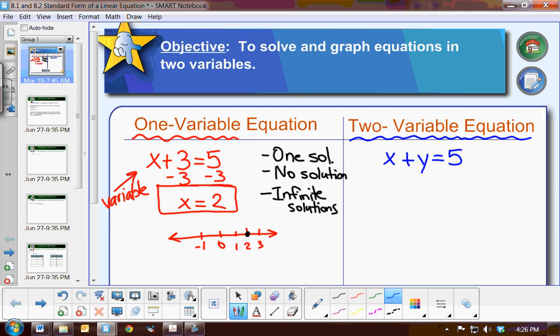Now you notice the obvious difference at this point is we have an x and a y, two variables. Now the reason why we were talking about functions, domain, and range just this last week is because when we have two variables, we always will have a domain and a range.